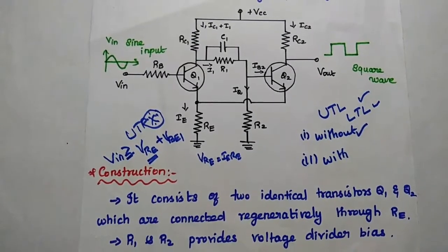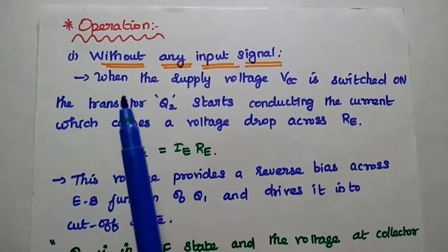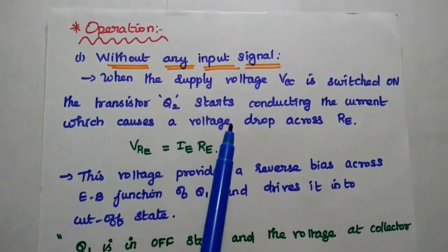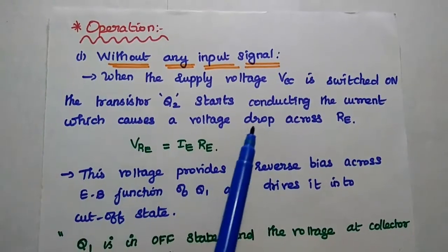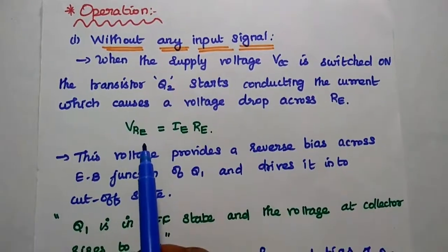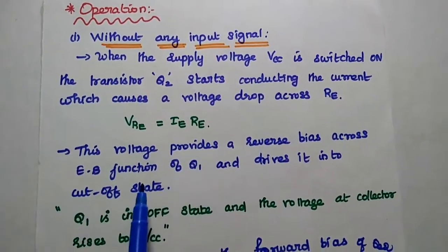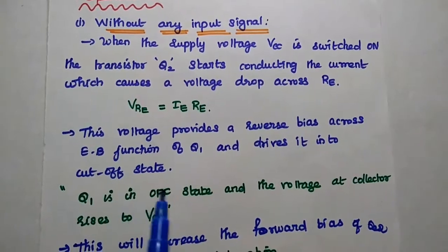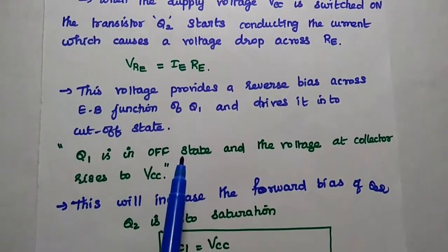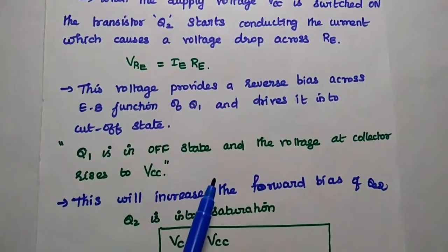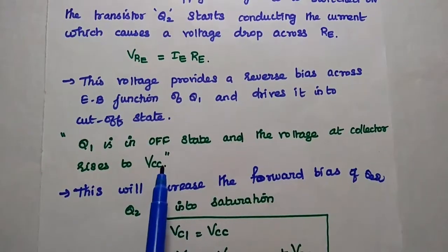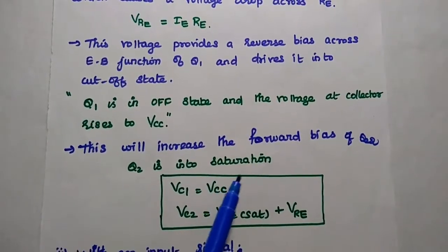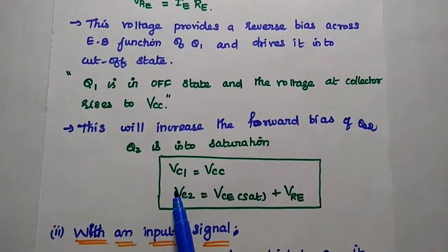R1 and R2 provide voltage divider bias. This is the overview of the operation. The first condition is without any input signal: when the supply voltage is switched on, transistor Q2 starts conducting, causing a voltage drop across the emitter resistance — VRE = IE × RE. This voltage provides a reverse bias across the emitter-base junction of Q1, driving it into the cutoff state. Q1 is in the off state and the voltage at its collector rises to VCC, increasing the forward bias of Q2 and driving Q2 into saturation. At this time, VC1 = VCC.